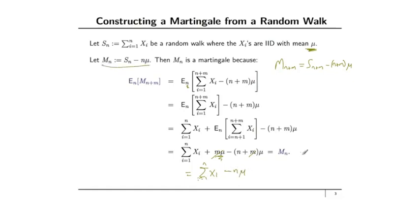We see that this is equal to Mn. So we have shown that the expected value of M subscript n+m, conditional on time n information, is equal to Mn, and so it is a martingale.